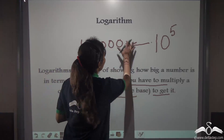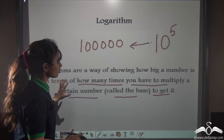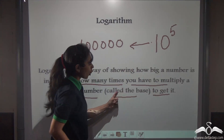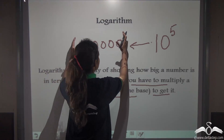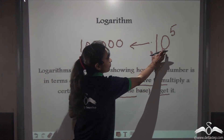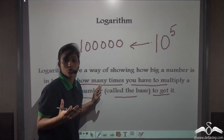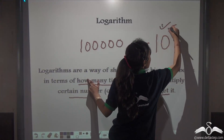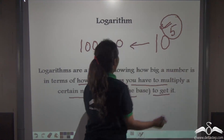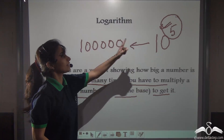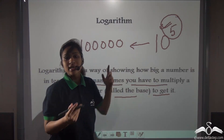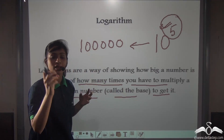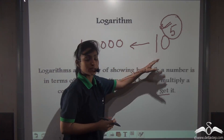Logarithms are a way of showing how big a number is in terms of how many times you have to multiply a certain number called the base. If this is the big number and I am taking the base as 10, how many times do you need to multiply 10 to get this? 5 times. So this is actually the log of 1 lakh if I take 10 as the base. This actually helps people to express big numbers in the form of small numbers.